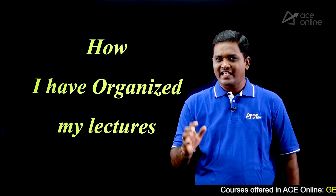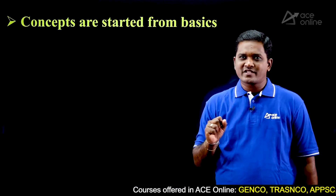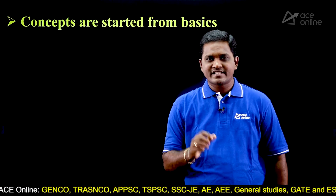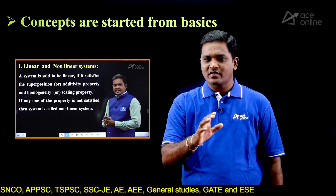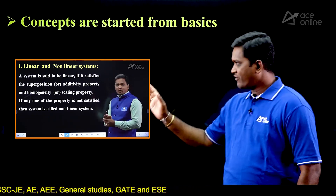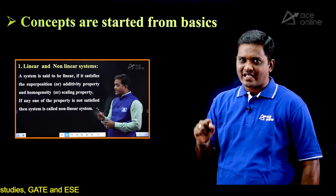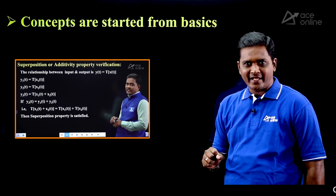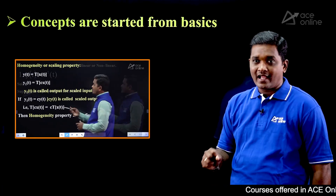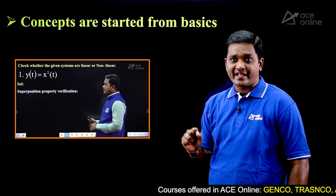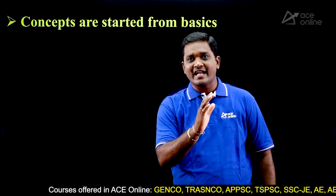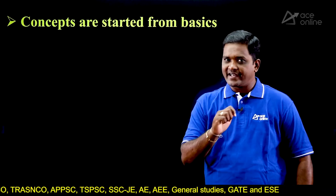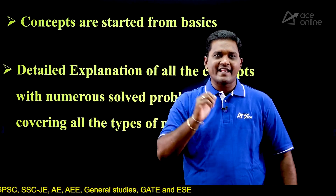Now let me explain how I have organized my lectures. The first key feature is that all concepts start from basics at the root level. For example, for linear and nonlinear systems, I did not solve problems directly — first I explained the properties a system must satisfy to be called a linear system, then explained the superposition property, then homogeneity property, and after that solved problems on linear and nonlinear systems. Being perfect in basics helps you easily understand all concepts.